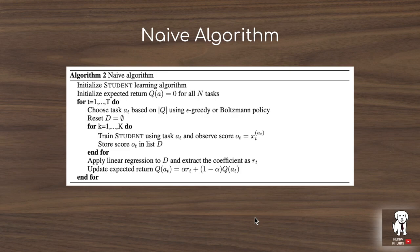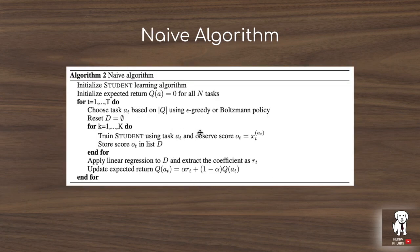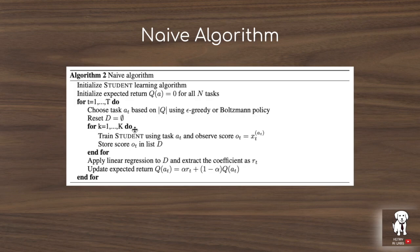The naive algorithm extends the online algorithm to better capture the learning curve slope. Rather than training on the selected task for one step and then updating, the student trains on that task for k steps. This produces a time sequence of reward updates, and a linear regression model is fit to model the evolution of performance over those k steps. The slope coefficient from that regression becomes the updated reward expectation for the teacher — giving a better estimate of the learning curve slope.